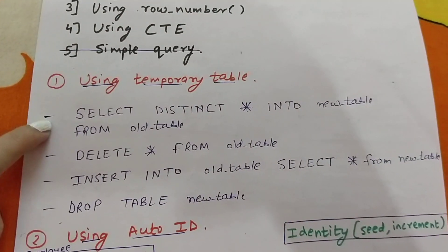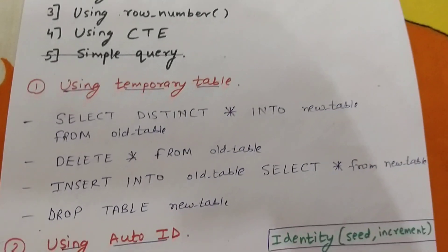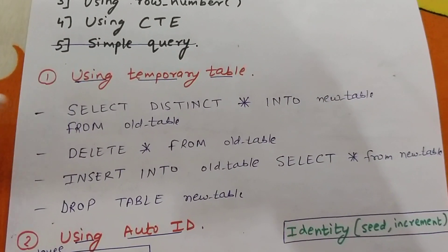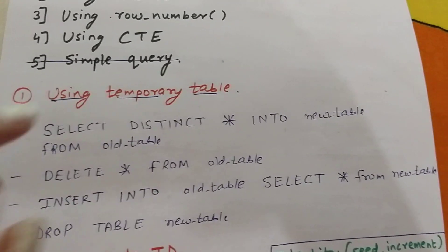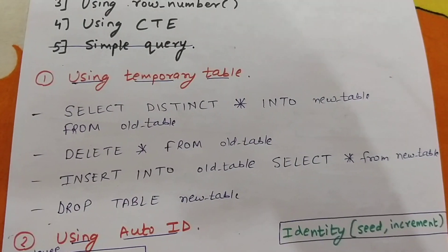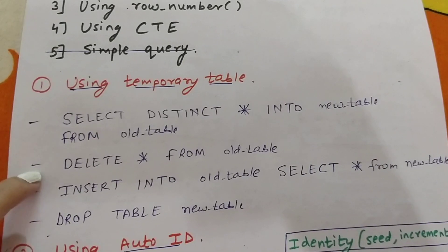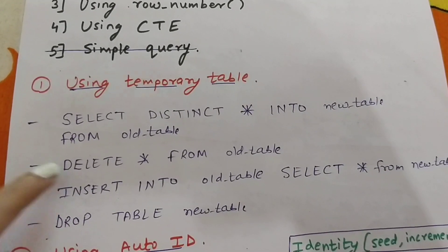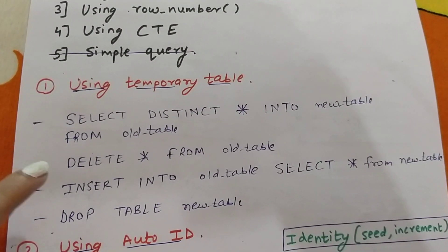The first way is by using a temporary table. What we're going to do is first, SELECT DISTINCT * INTO new_table FROM old_table. This step selects all the distinct items and puts them in a new table. The second step is DELETE FROM old_table, which will delete all items from the old table. You can also use TRUNCATE here — whichever suits best.